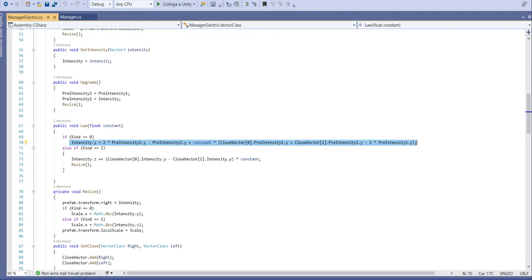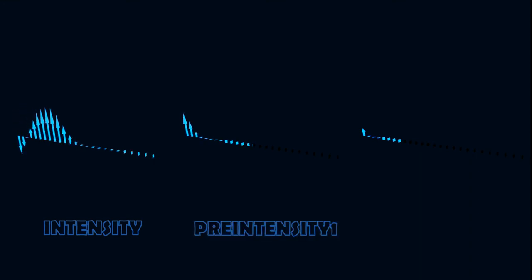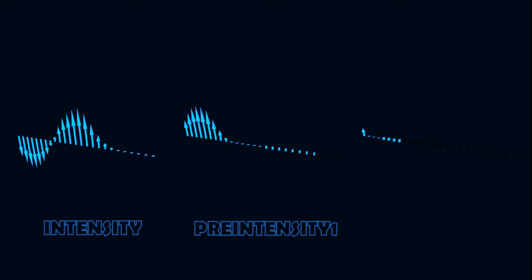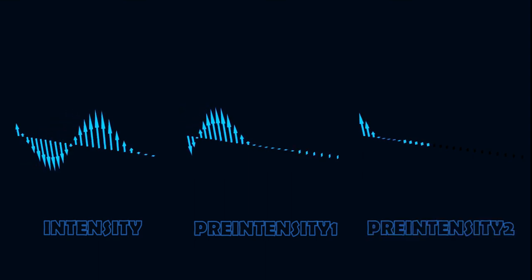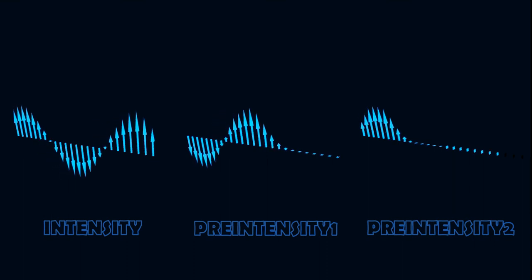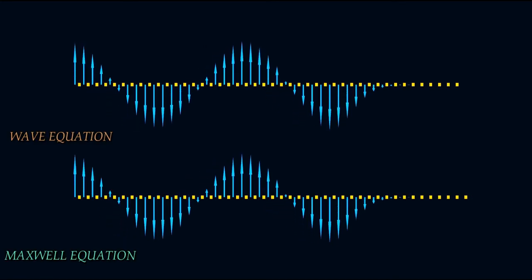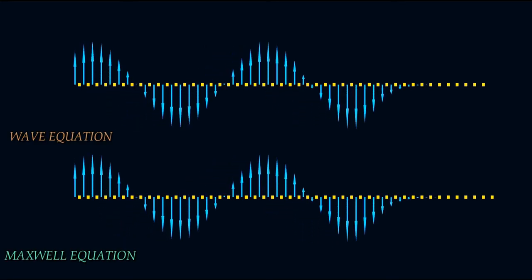In this formula, the intensity is the value of the field at this moment, pre_intensity_one is the previous value of the electric component, and pre_intensity_two is the value before that. The magnetic component is calculated as before. Why do I prefer this strange method since the first one is more physical?